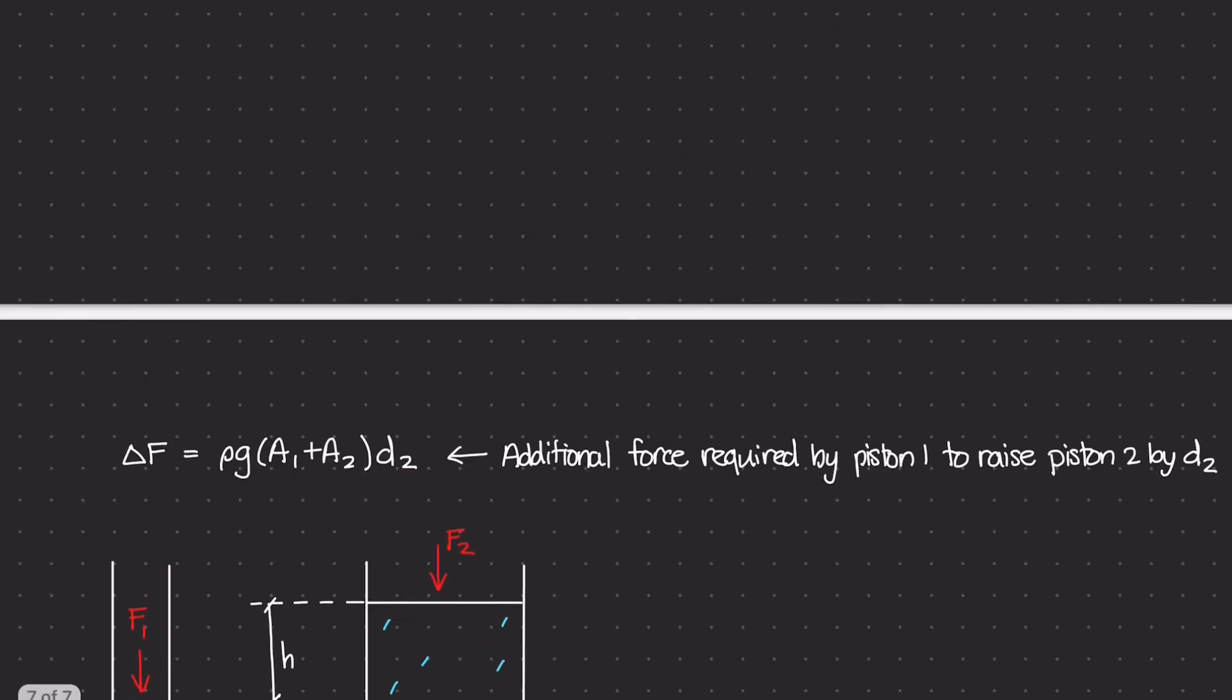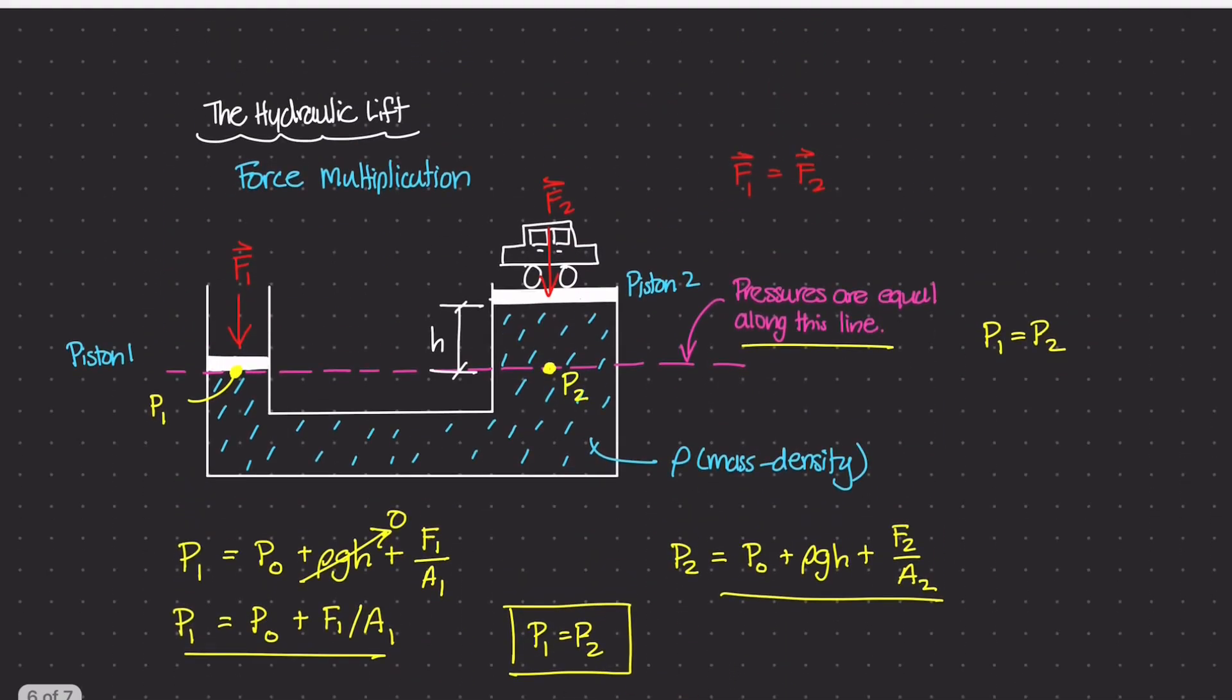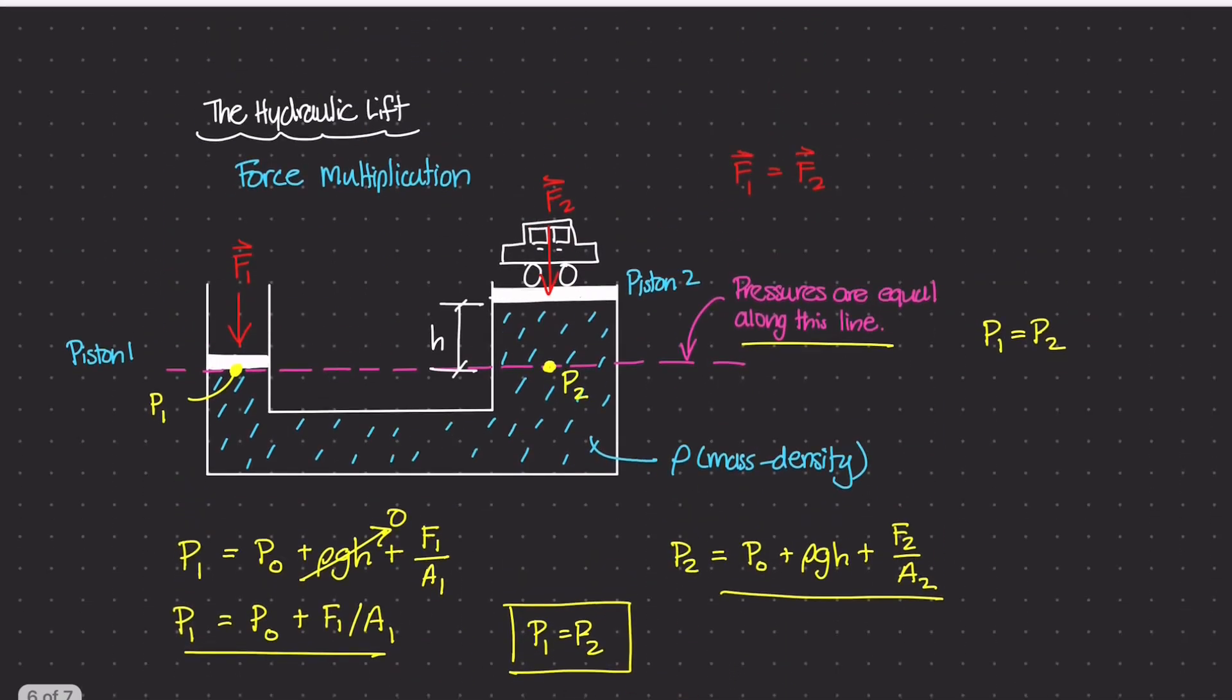So in the previous video, we were looking at this hydraulic system where you had a small piston on the left and a larger piston on the right. And you could apply a force of F1 downwards on the smaller piston. And that would increase the pressure throughout this system to be able to lift up a really big object like a car.